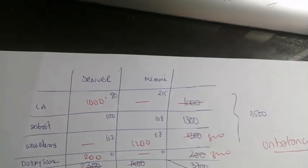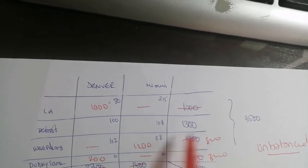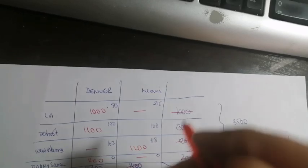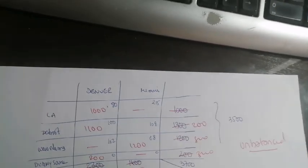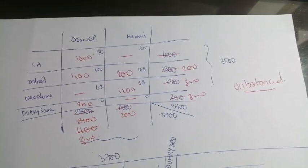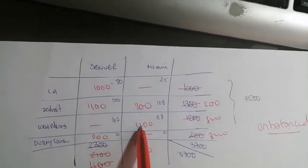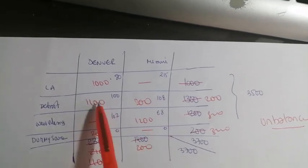We move here to 1,100. Here is 200 and this is 0 here, and here is 200. We calculate the value: 200 times 0, 1,200 times 68, 200 times 108. The same applies to calculate the total cost.